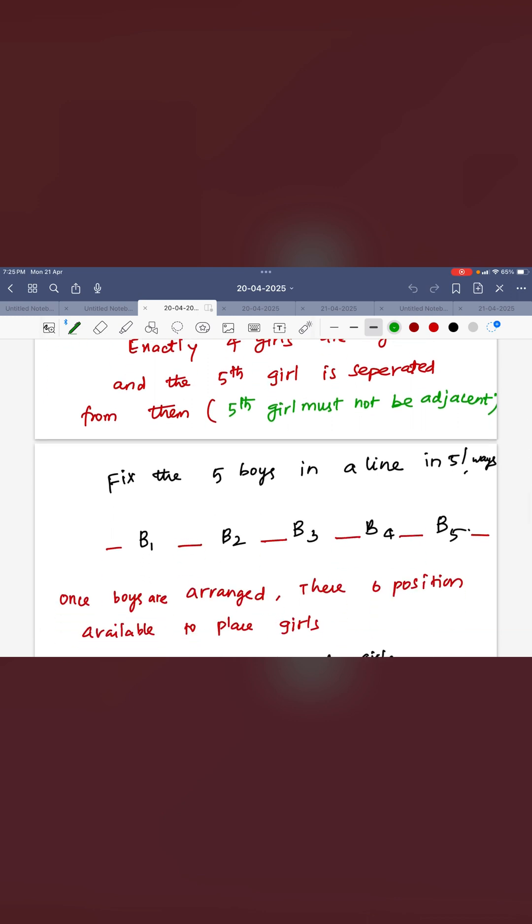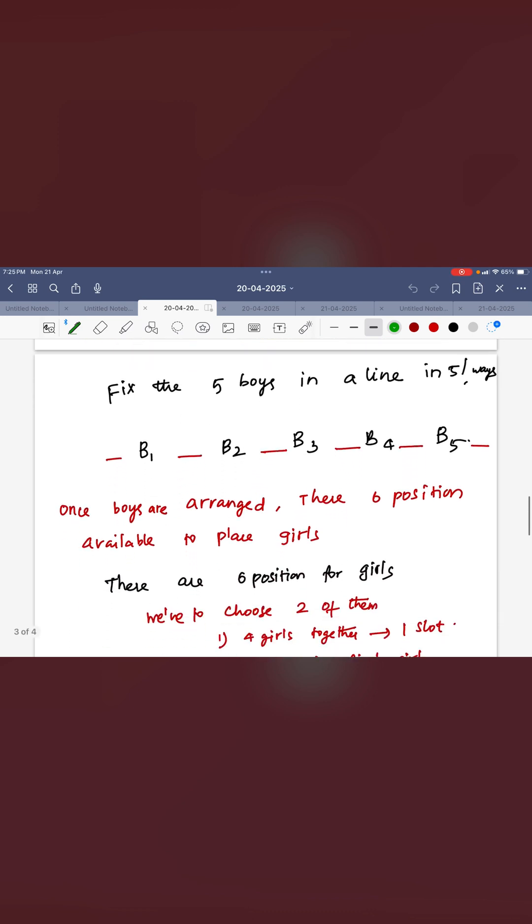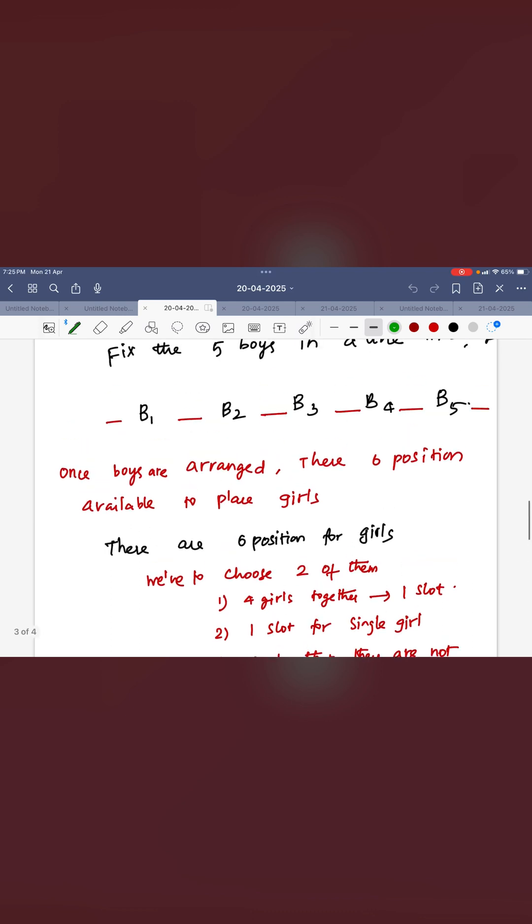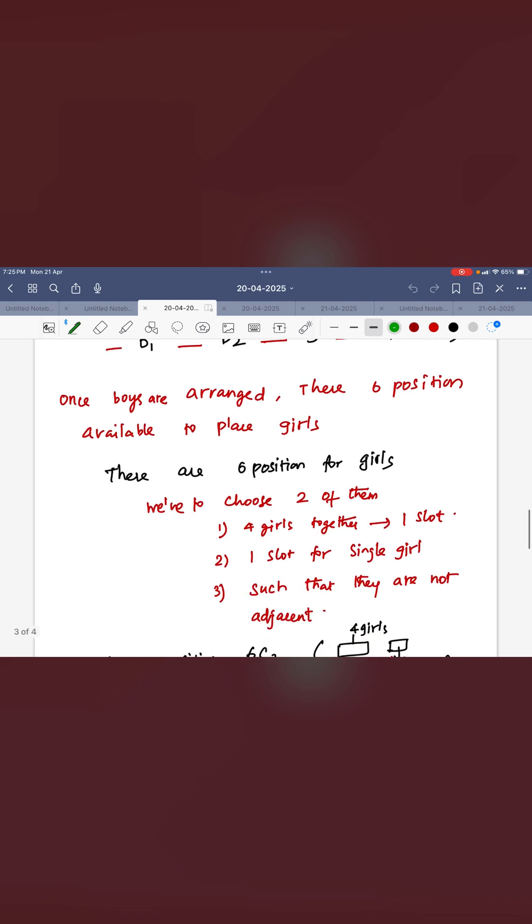First you have to fill the 5 boys in the row. So 5 factorial ways possible for the boys. Then you can see how many positions for the girls is there. You can see red color. There is a gap. 6 gaps is there. That means 6 positions available.